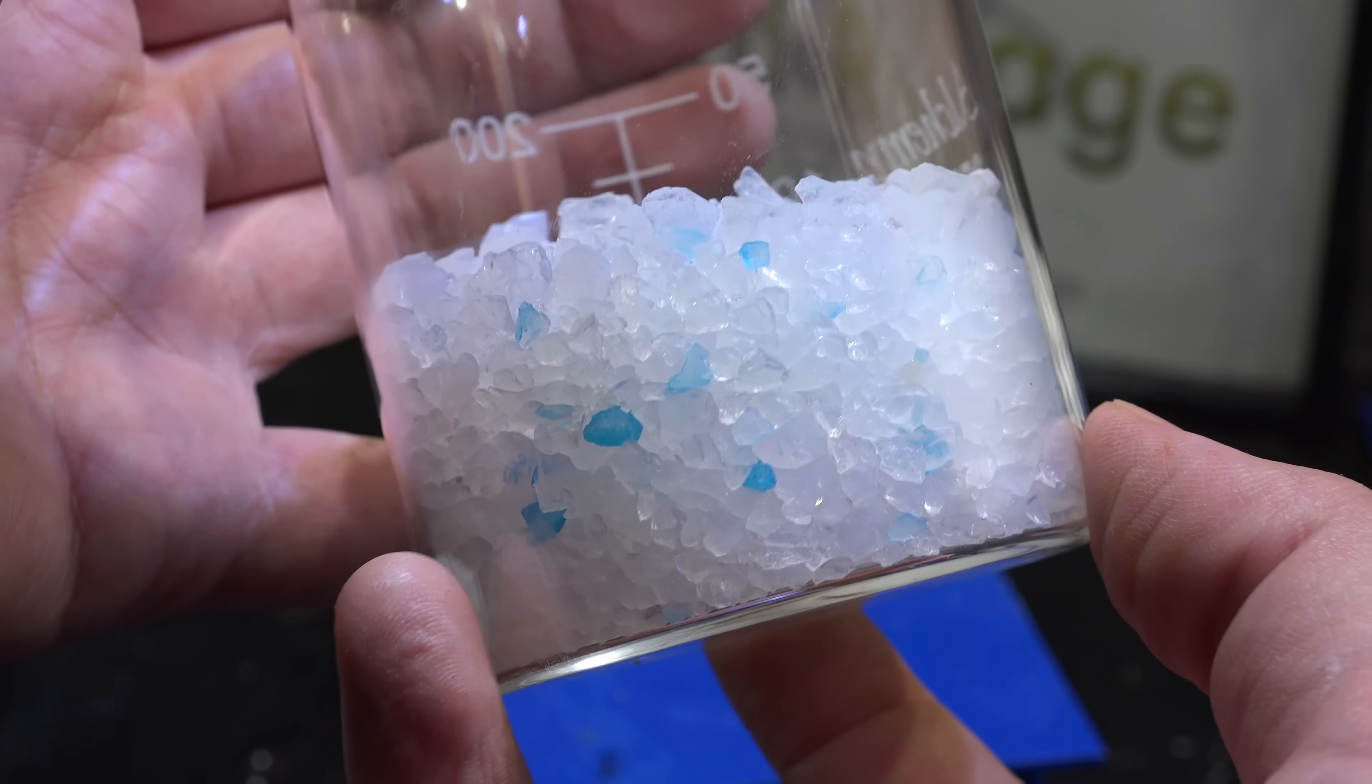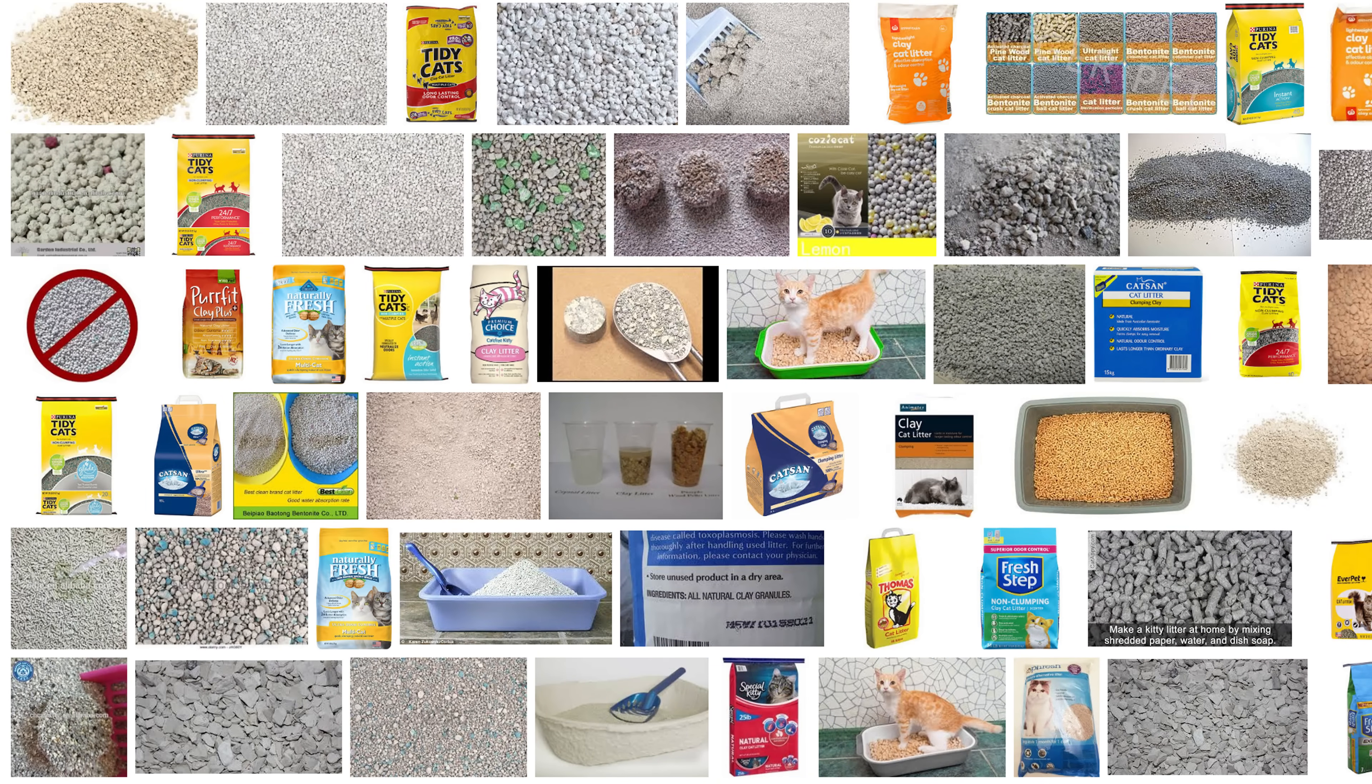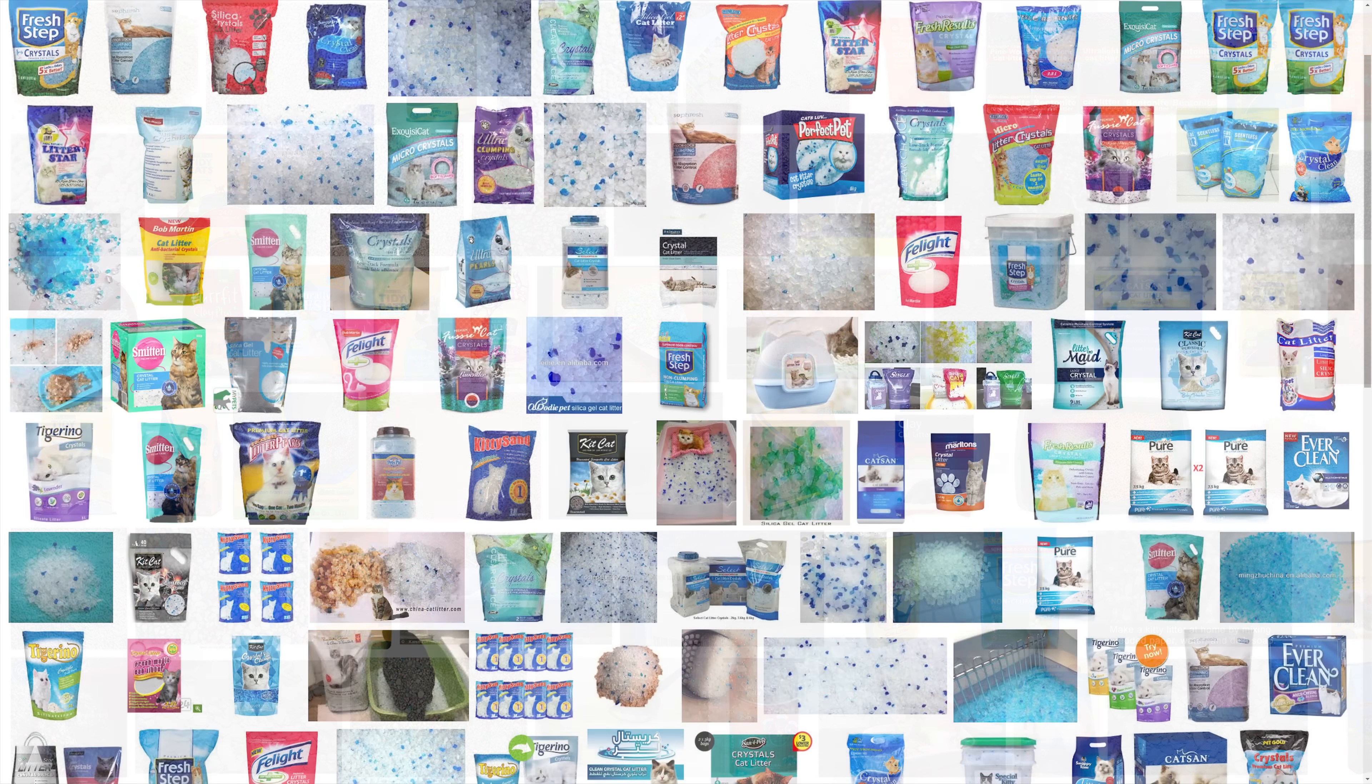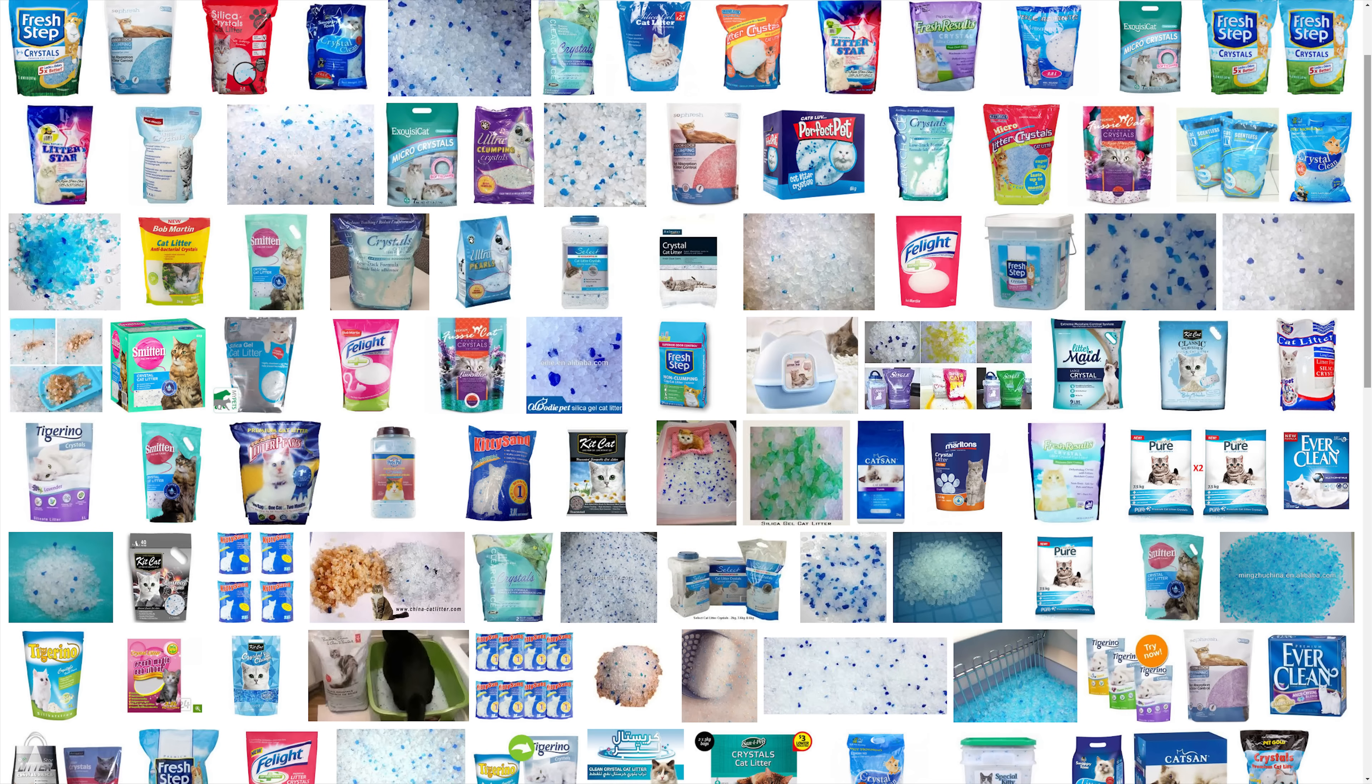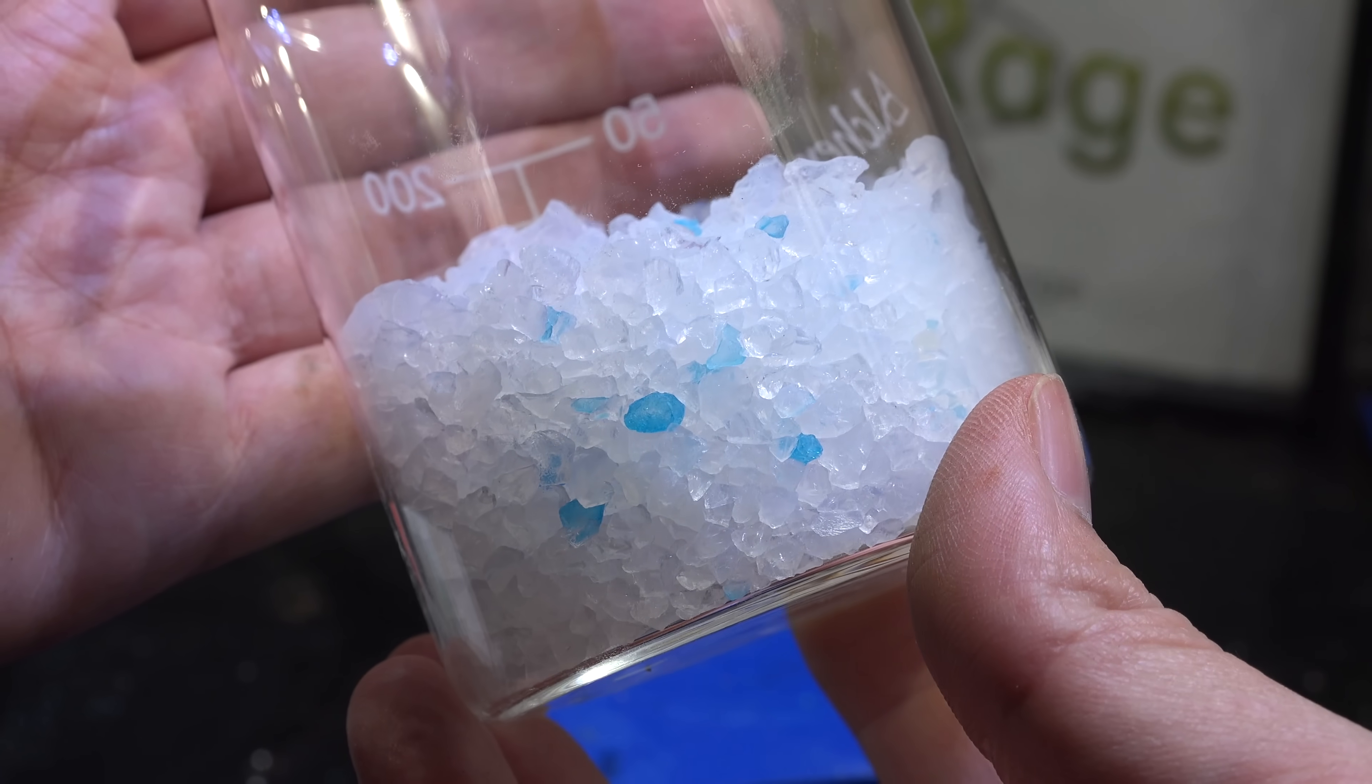Silica gel based cat litter. Most cat litter is based on clay, but you can find some types of cat litter based on silica gel. It's usually called crystal cat litter. While expensive for cat litter, this is much cheaper than silica gel based desiccant bags.